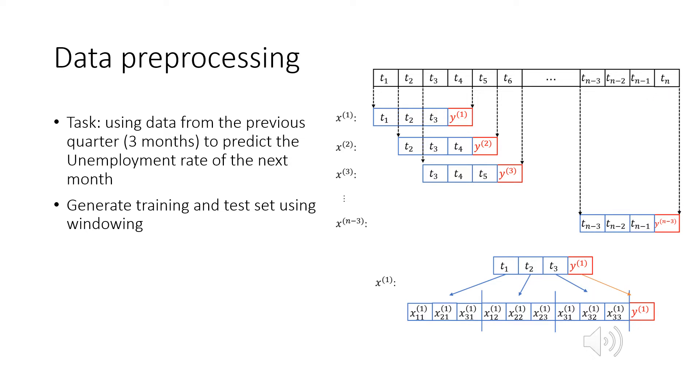Now, suppose we only use three indicators as our features. Each training sample will have three times three equals nine features corresponding to the three features of the first month, three features of the second month, and the three features of the third month. Our training sample will be a 9 by 1 vector, as shown here.